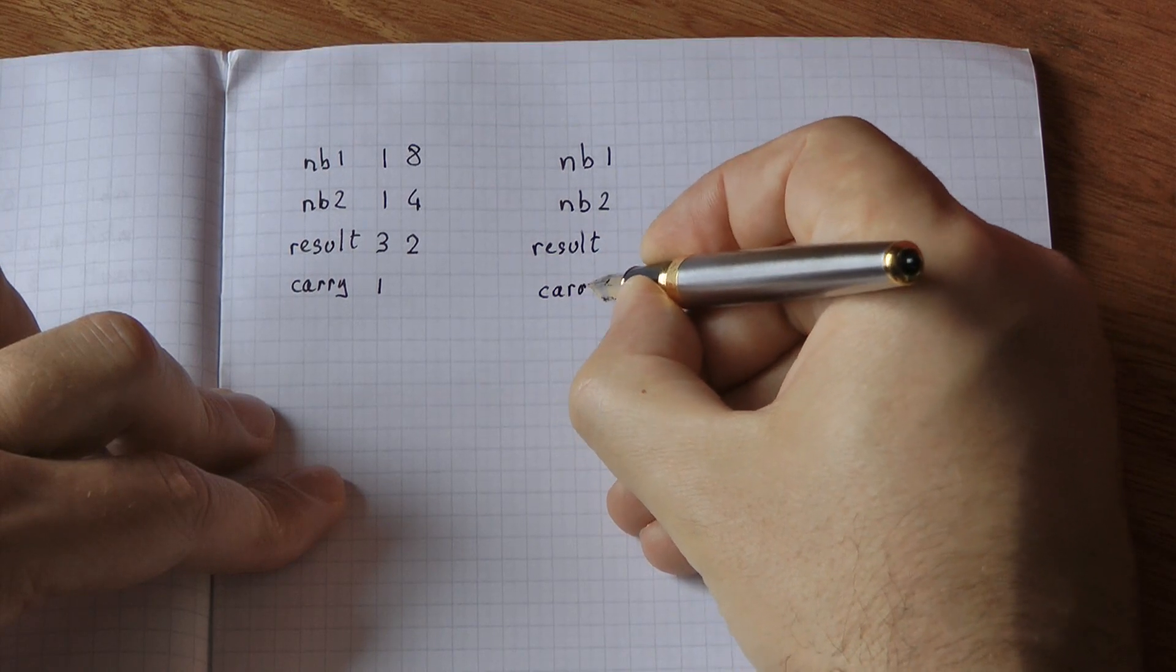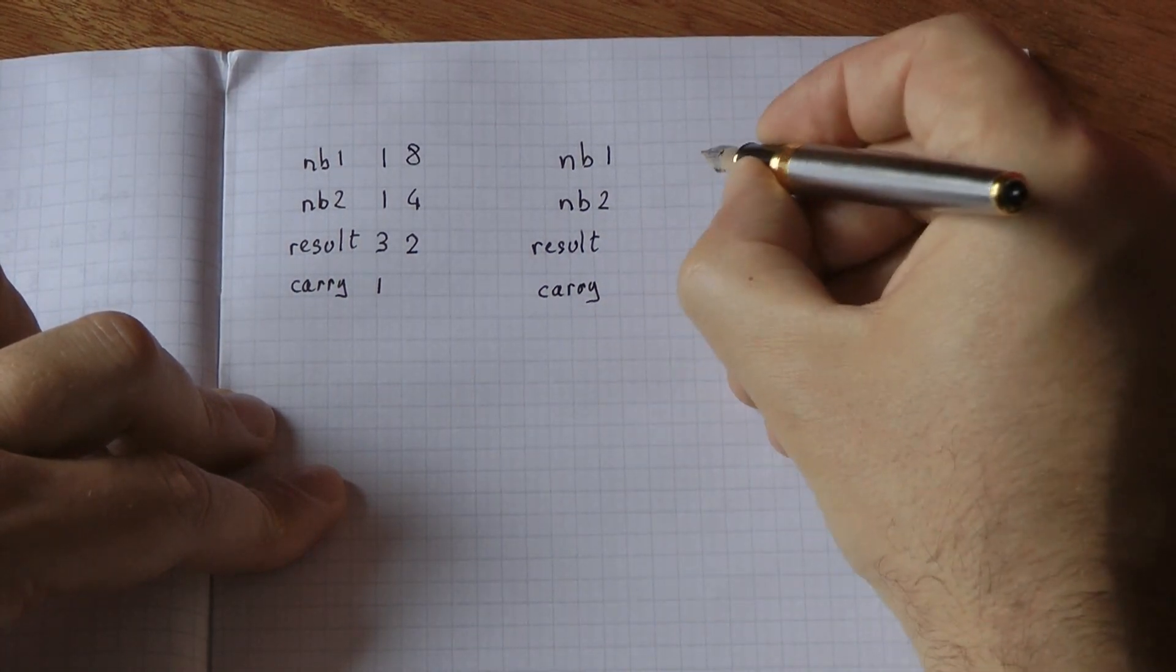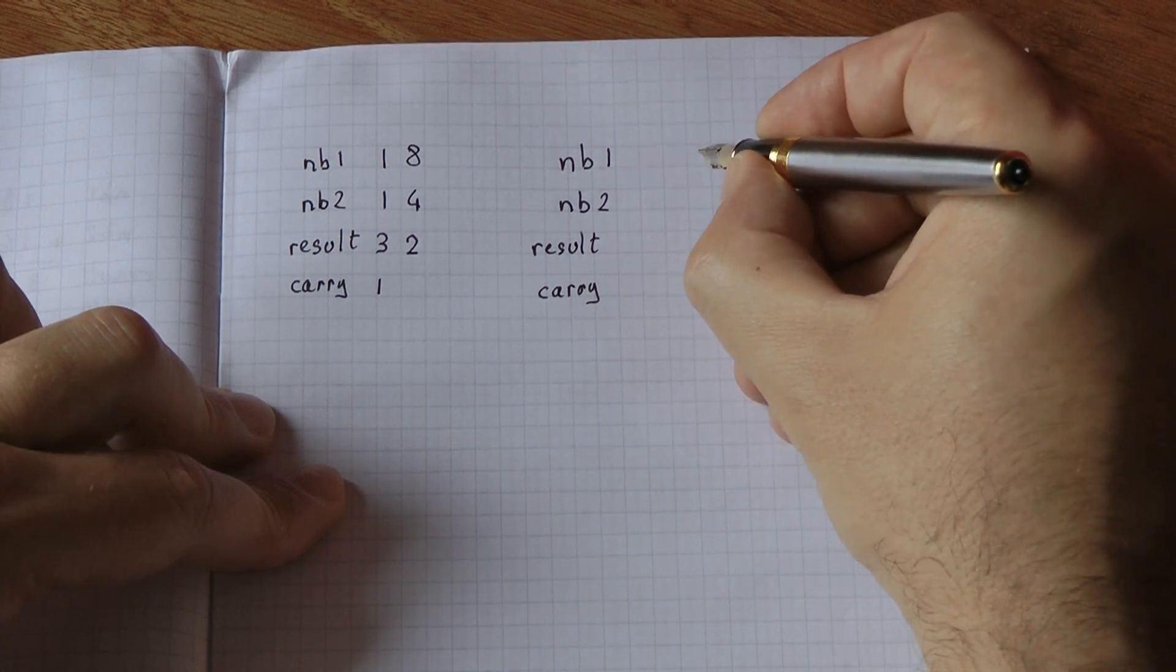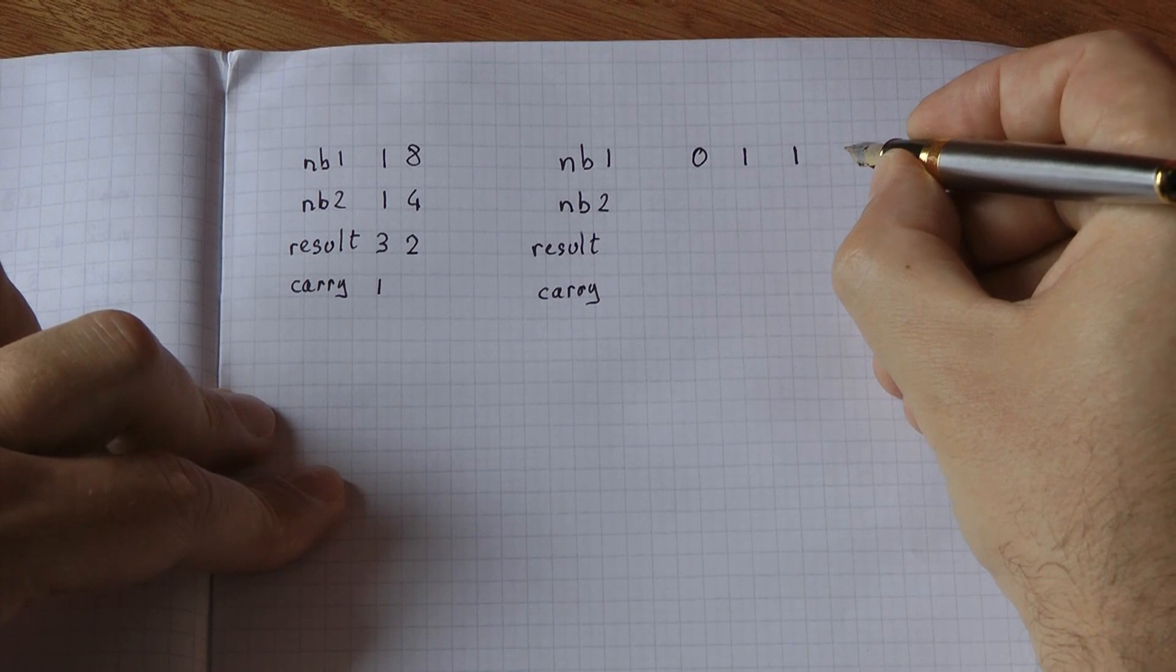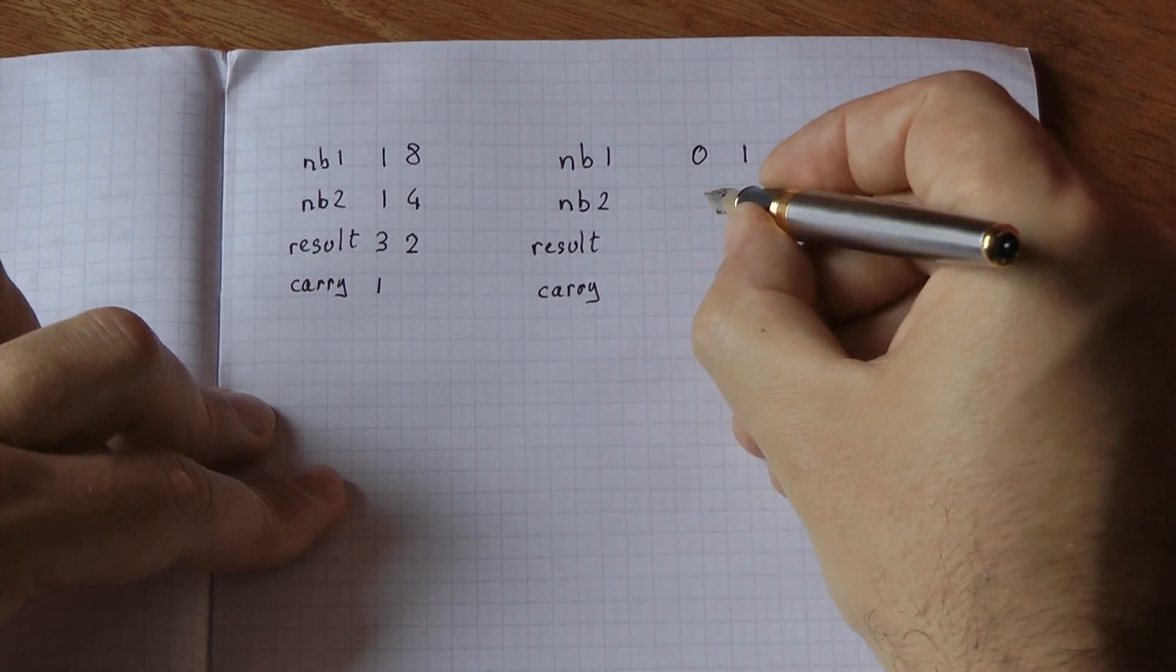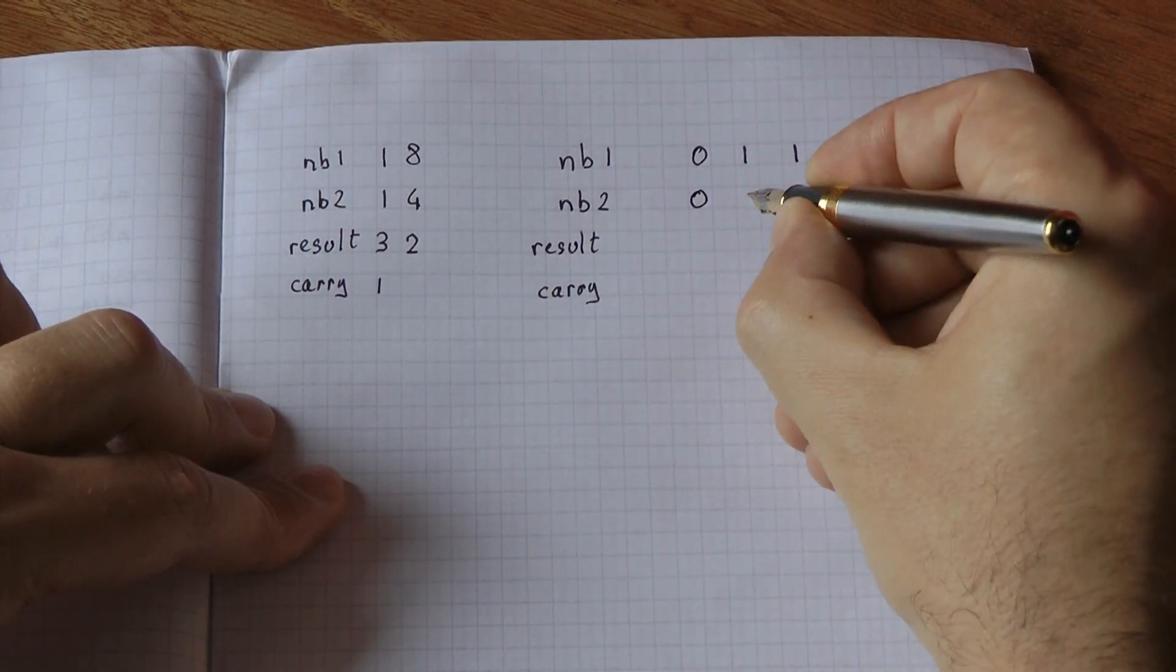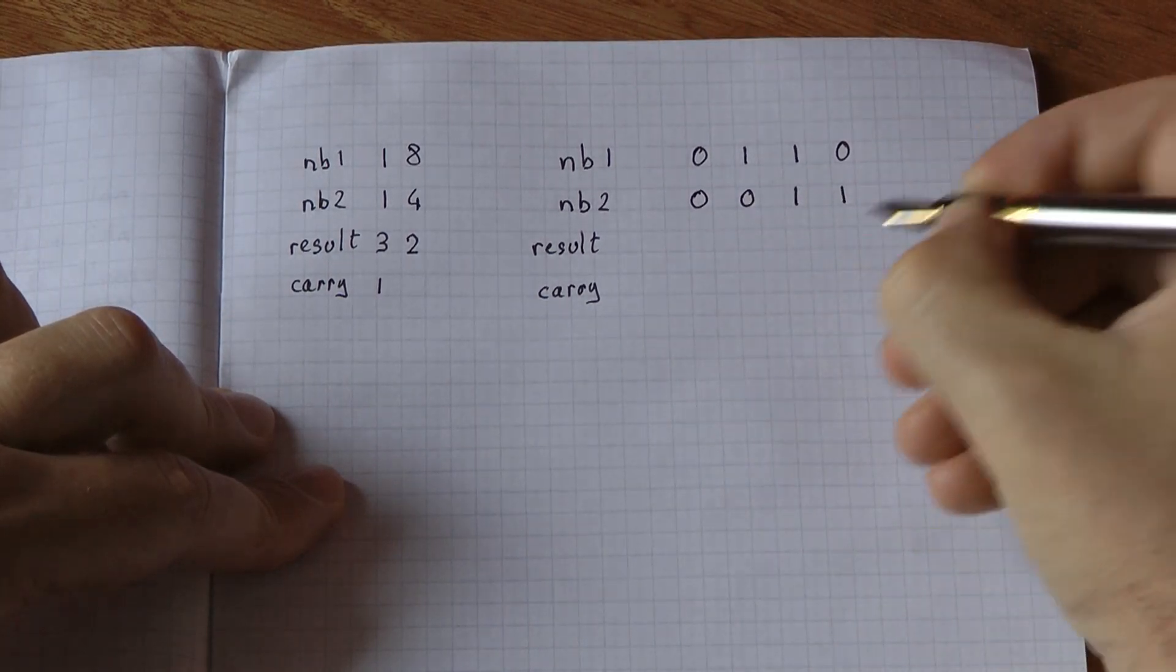I will write down the carry underneath the way we do it in the UK. Let's pick up two binary numbers, 0, 1, 1, 0, to which I will add 0, 0, 1, 1.